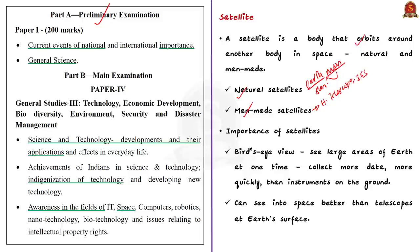Next question is: what is the significance of satellites? Satellites have a bird's eye view, meaning they are at a very high location and can see large areas of Earth at one time. This ability means satellites can collect more data more quickly than instruments on the ground. Satellites can also see into space better than telescopes at Earth's surface, because they fly above clouds, dust, and molecules in the atmosphere.